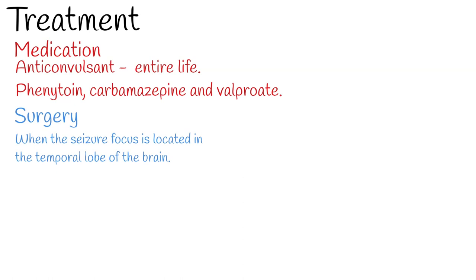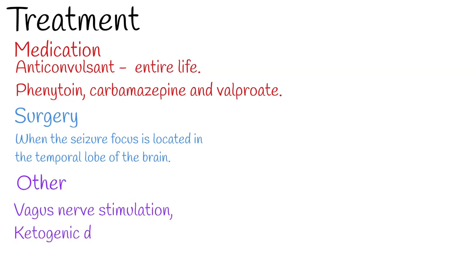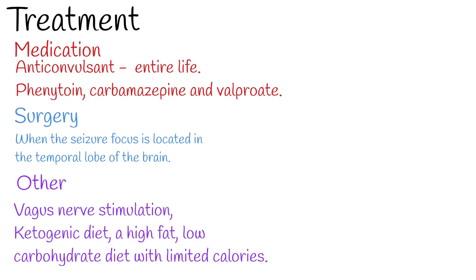When medicines do not work and surgery is not possible, other treatments can help. These include vagus nerve stimulation, where an electrical device is implanted under the skin on the upper chest to send signals to a large nerve in the neck, and the ketogenic diet — a high-fat, low-carbohydrate diet with limited calories. Most people with managed epilepsy live a full life, and regular exercise may actually improve seizure control. If epilepsy is left untreated, it increases the risk of death about three times, which is why proper diagnosis and management is important.